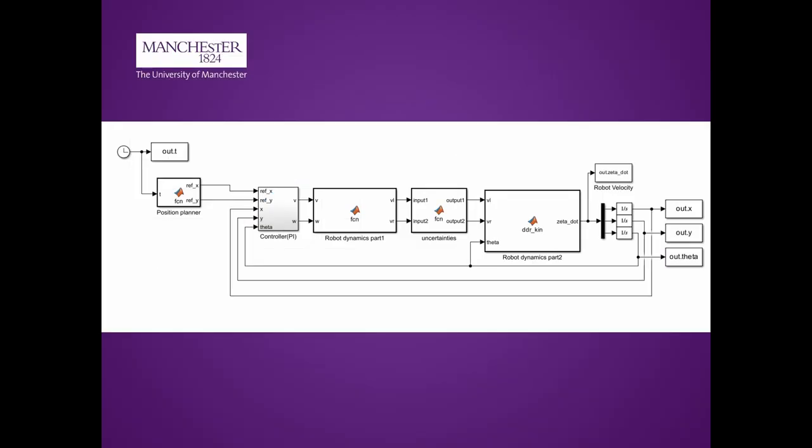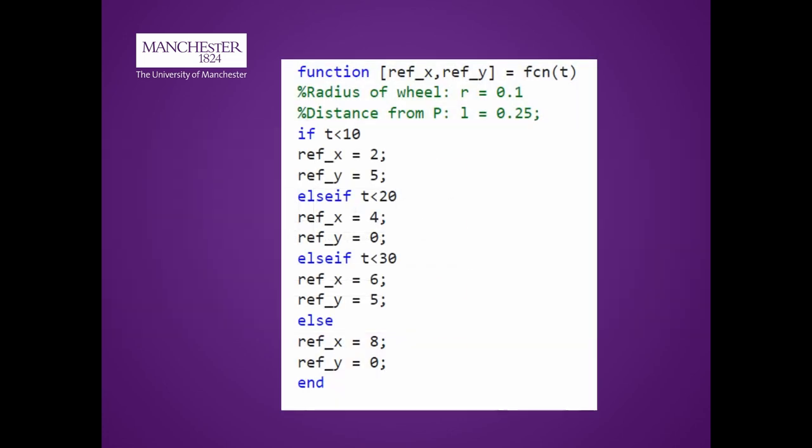Combining our tuned PI controller with a position planner, more complex plans can be completed by our mobile robot. By providing a list of desired target points, we can create a path for the robot to follow.